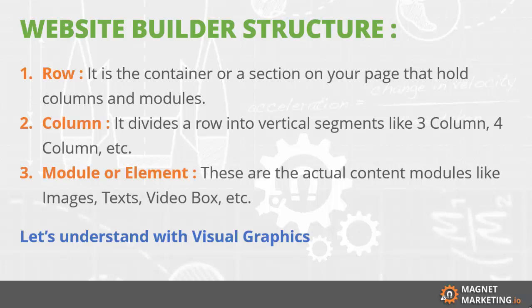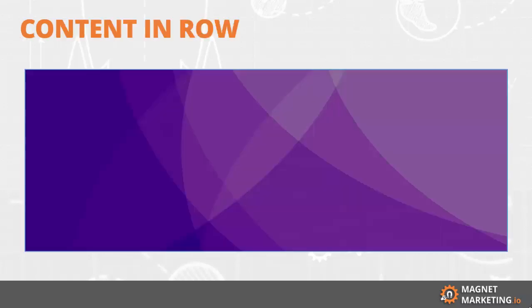Let us understand with visual graphics how the website builder structure works. First and foremost, if you want to add any content you need to have a row. Once you add a row, the row is blank — you can provide a color to your row or maybe an image. So let us say you have inserted a blank row and in the row settings you have selected a background image. Still, it is only a row.